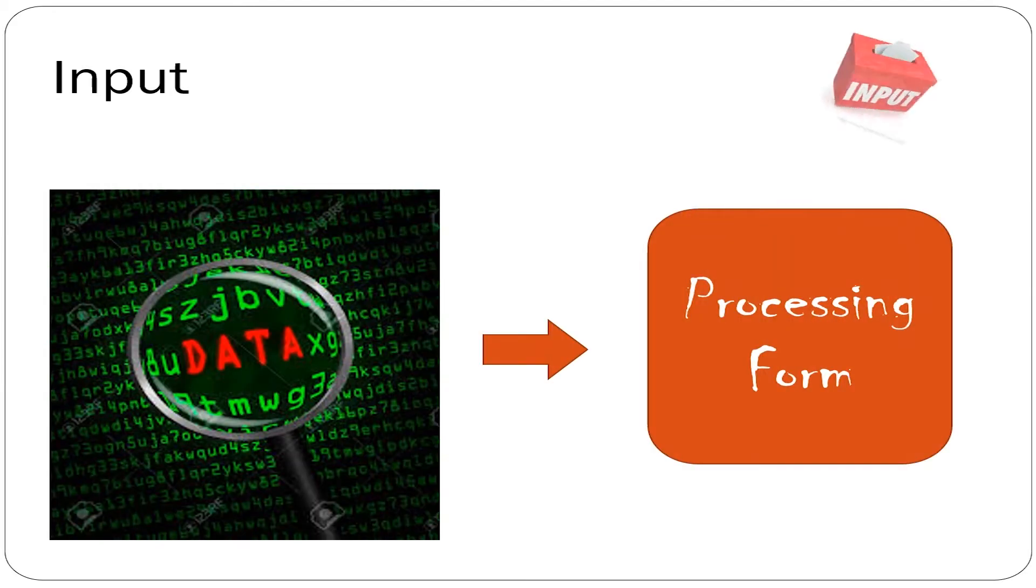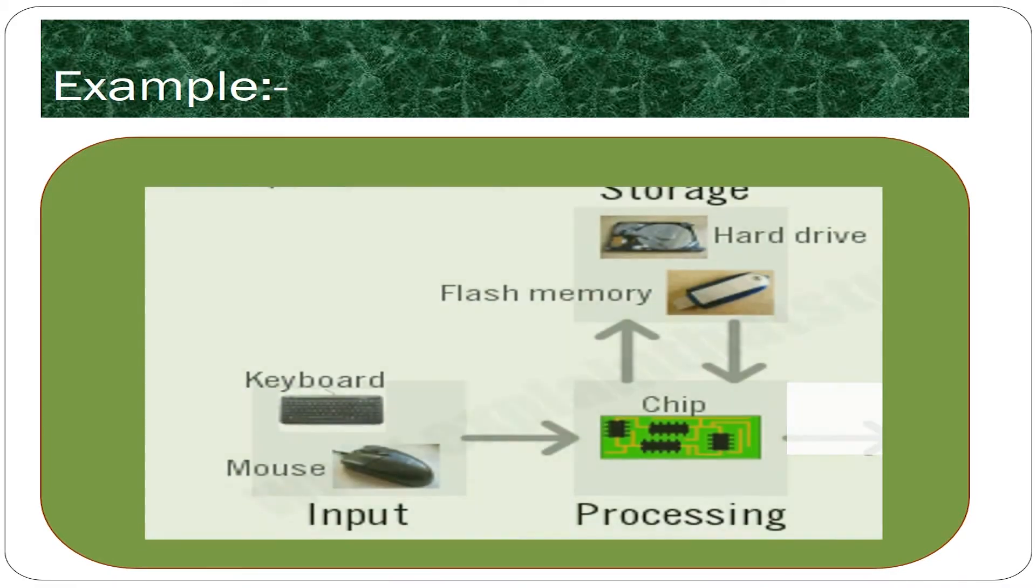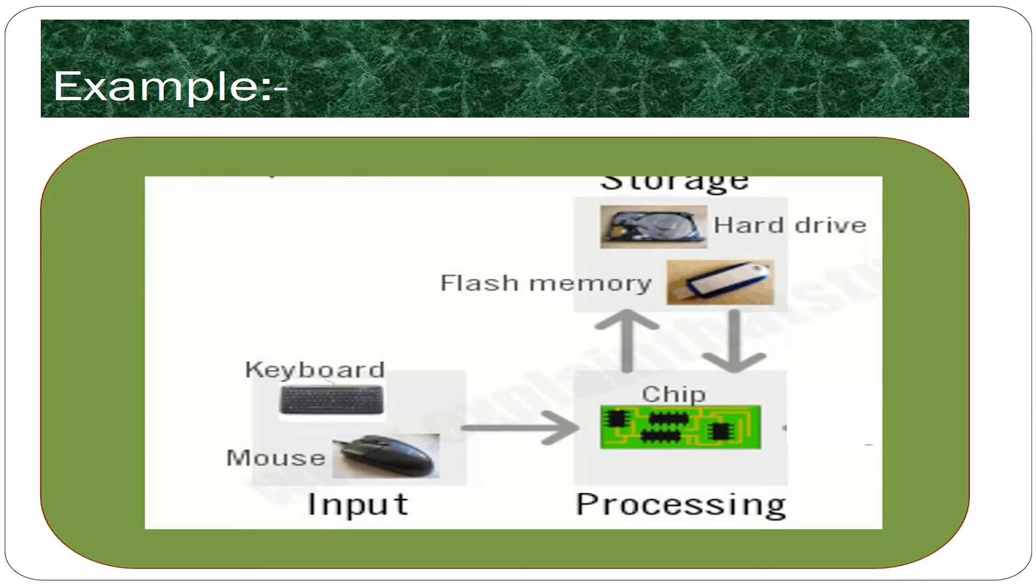Input: In this step, the input data is prepared for processing in some form. The form will depend on the processing machine. For example, when an electronic computer is used, the input data could be recorded on any one of several types of input medium, such as magnetic disks, tapes, and so on.